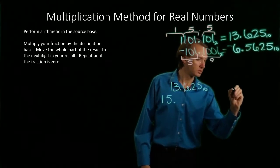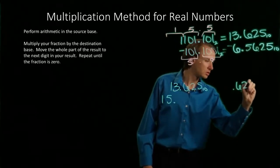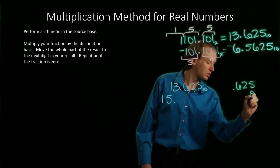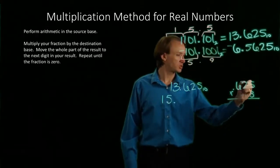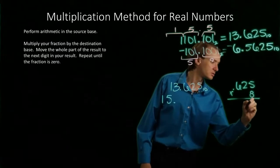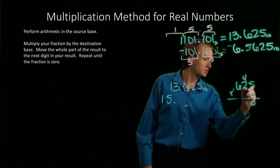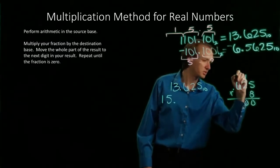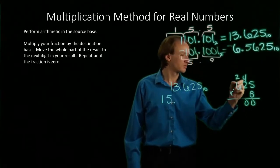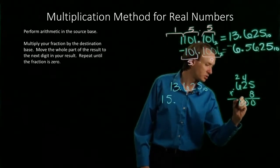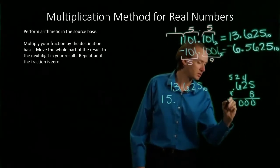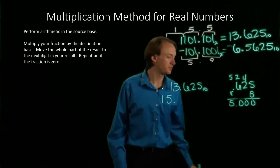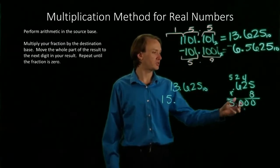So .625 times 8. 16 plus 4 gives me 20. 48 plus 2 gives me 50. So .625 times 8 is 5.